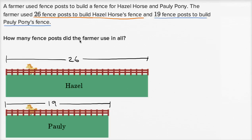How many fence posts did the farmer use in all? So what do they want us to do — add or subtract these numbers? They're looking for the total, in all. How many total fence posts did the farmer use? The total is how many were used in Hazel's fence and Polly's fence, so we should add these two numbers.